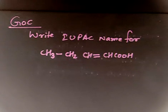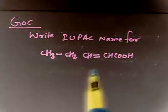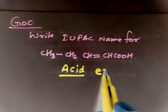So, we have to write IUPAC name for this compound. This is an easy one. You see, we have two functional groups, one alkene and one acid. So, we have acid as a functional group and we have ene as a functional group.